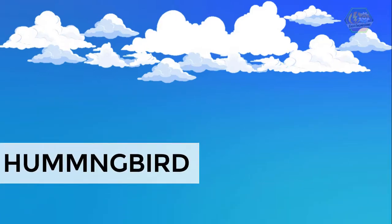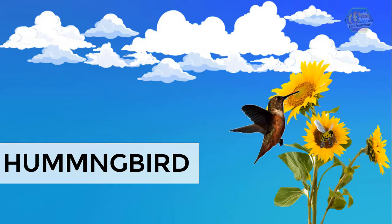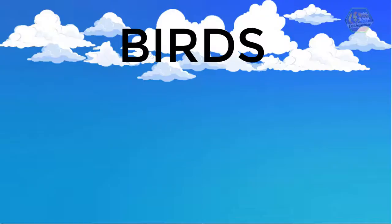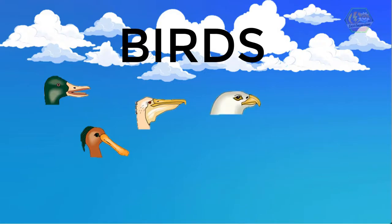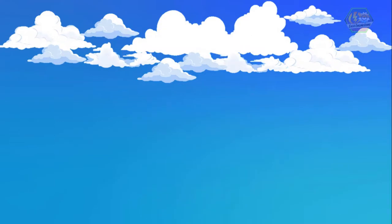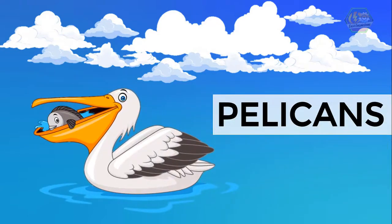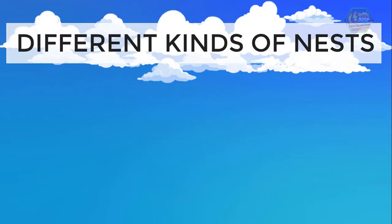Hummingbirds are one of the smallest birds, and they suck nectar from flowers just like bees do. That's why they have long and thin beaks. Because birds have different shaped beaks, they can eat different kinds of food. Pelicans have very big beaks that can carry a number of fish in them.